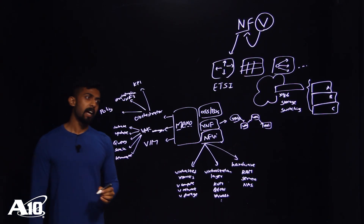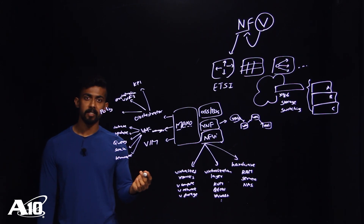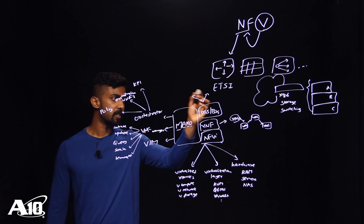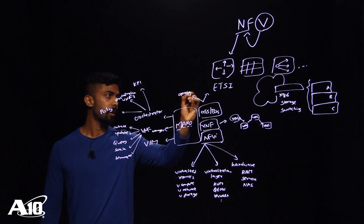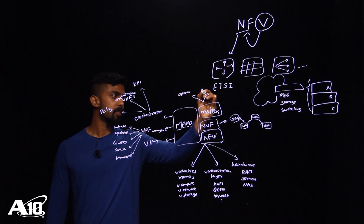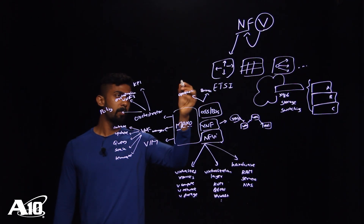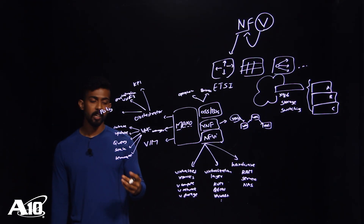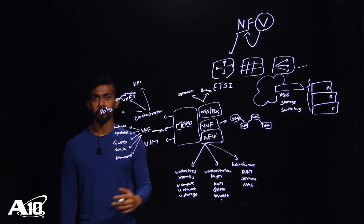The last and final component of the NFV architecture is the OSS/BSS layer. OSS, the Operations Support System, handles network management, fault management, and so on. BSS, the Business Support System, deals with customer management, billing management, and revenue management.